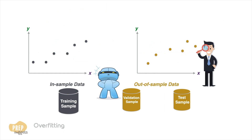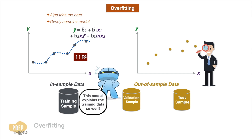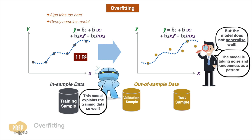The bigger problem for machine learning algorithms, however, is that of overfitting. Overfitting is an issue when the machine learning algorithm tries too hard to explain the variation in the training data, such that the model becomes overly complex, usually using too many features. While such a model will have a very high R-squared, meaning it explains the variation in the training data very well, the model does not generalise well. This is because some of the variation in both in-sample and out-of-sample data is just noise and randomness, so the R-squared when using out-of-sample data is likely to be low.